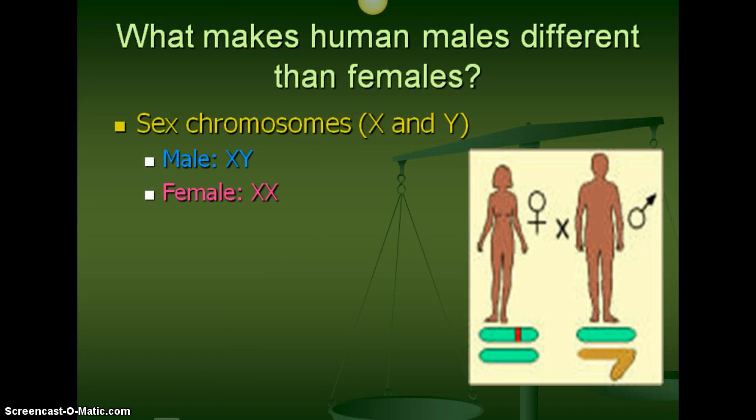First we're going to look at what makes humans male or female, and these are the sex chromosomes, which are X and Y. For males, we are XY, and females, we are XX.